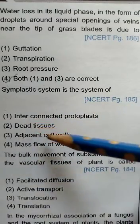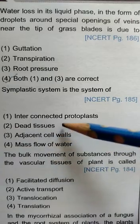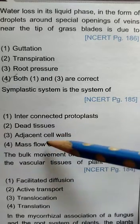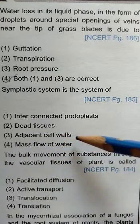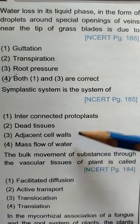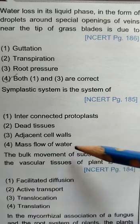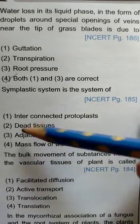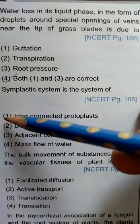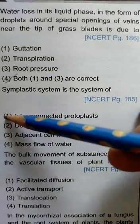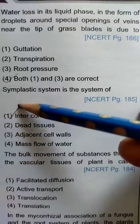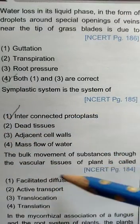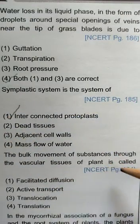Next, coming to the symplastic system: it is the system of interconnected protoplasts. Dead tissues form the apoplast, and adjacent cell walls are part of the apoplast. Mass flow of water is through xylem, so the first option is the correct option.